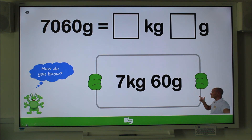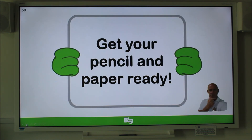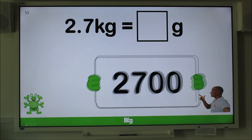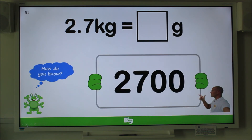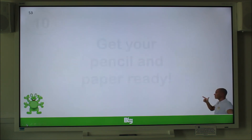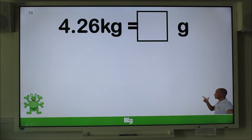Here comes another — have your pencil and paper ready. This is question 9 — remember to explain how you know. Well done — 2,700 grams. You're making good progress. Pencil and paper ready? Here comes question 10 — remember to explain how you know.